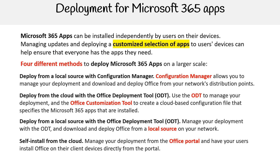The last method is to self-install from the cloud, which is probably the easiest one to perform. You manage your deployment from the Office portal and have your users install Office on their client devices directly from the portal. So those are the four different methods to deploy Microsoft 365 apps.